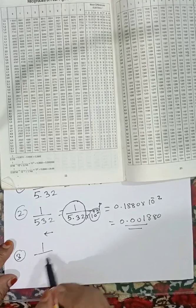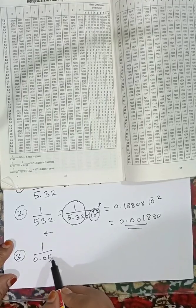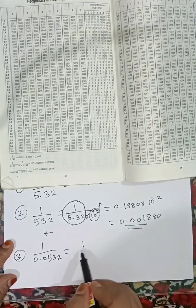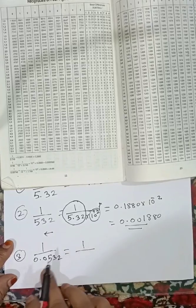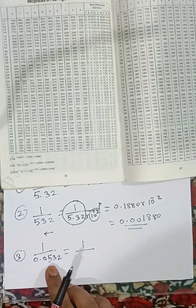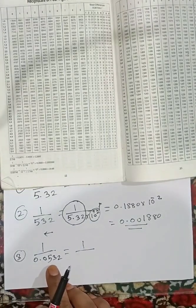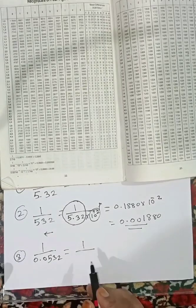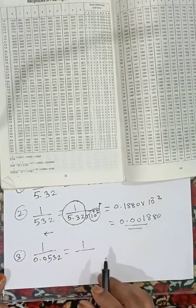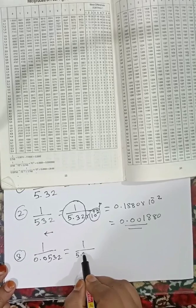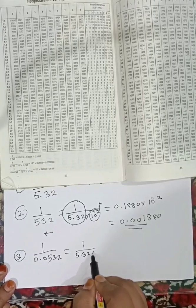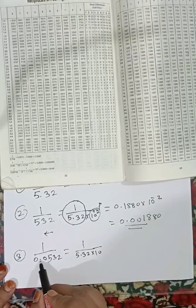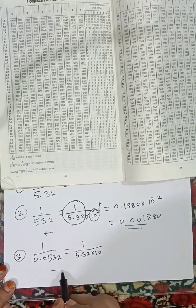Third example: 0.0532. Here, after one digit we place the decimal point at 5, so we shift to get 5.32. We shift the decimal point — one, two places — so we write 5.32 into 10 to the power of minus 2.